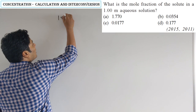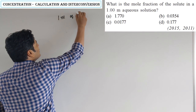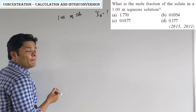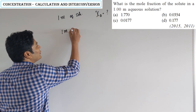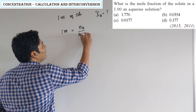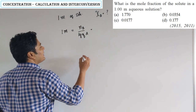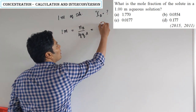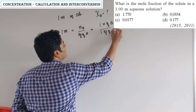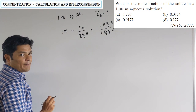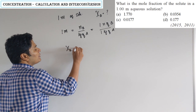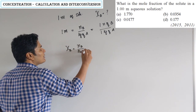We have a 1 molal aqueous solution, and they are asking what is the mole fraction of the solute. A 1 molal solution is nothing but moles of B divided by kilogram of A — meaning 1 mole of B in 1 kilogram of A. Chi B is moles B divided by moles A plus moles B.